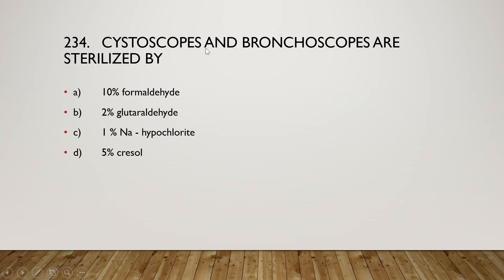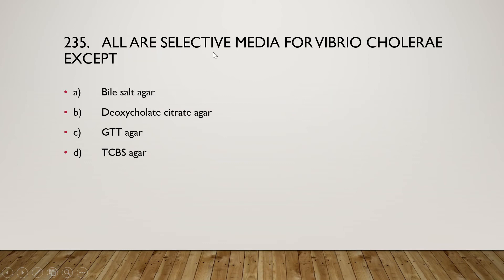Next question: cystoscopes and bronchoscopes are sterilized by 10% formaldehyde, 2% glutaraldehyde, 1% sodium hypochlorite, or 5% crystal? The right answer is option B — 2% glutaraldehyde is used to sterilize cystoscopes and bronchoscopes.